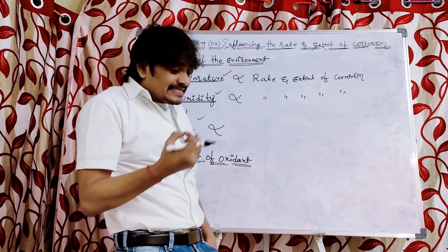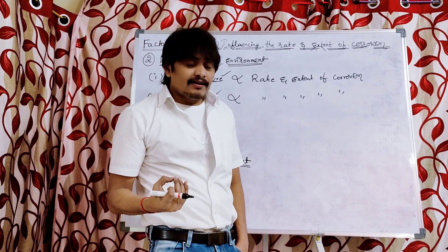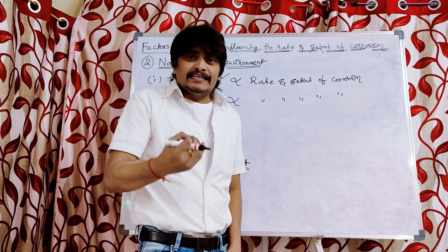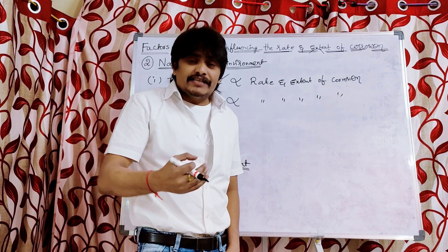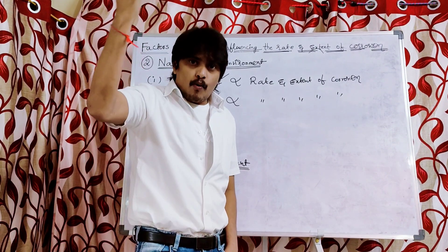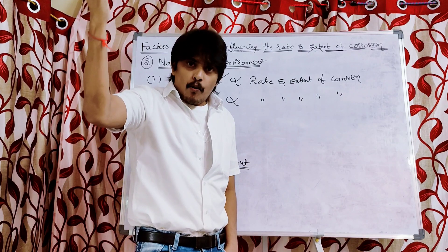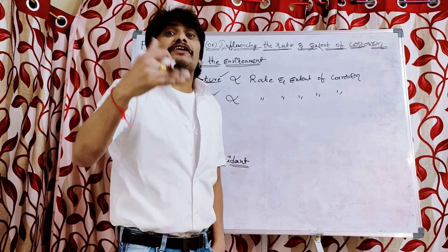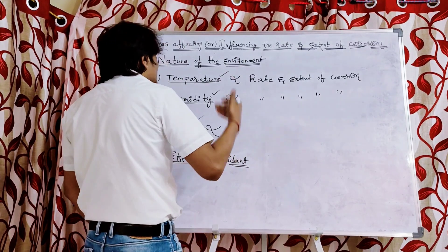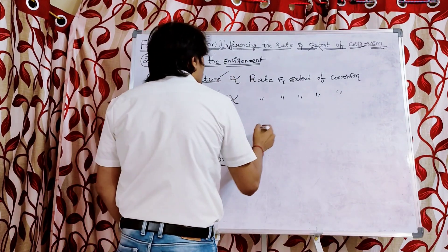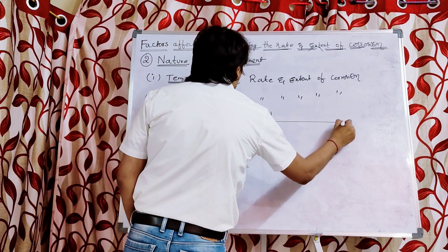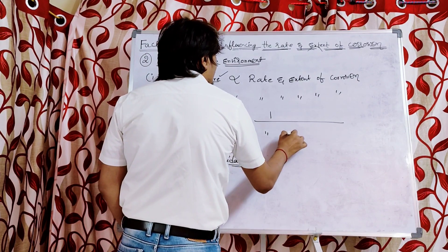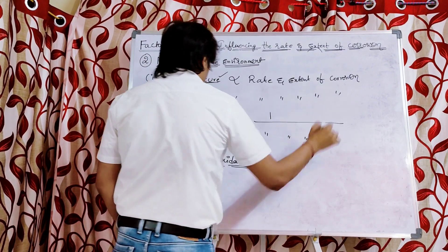When pH is less, the rate and extent of corrosion is more. Whenever pH decreases, corrosion increases — this is an inversely proportional relationship. So there is an inversely proportional relationship between pH and the rate and extent of corrosion.